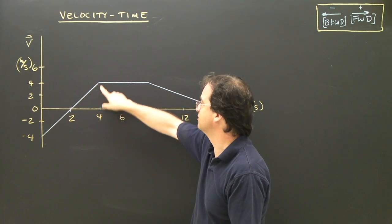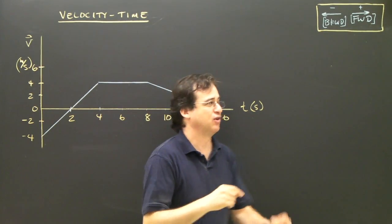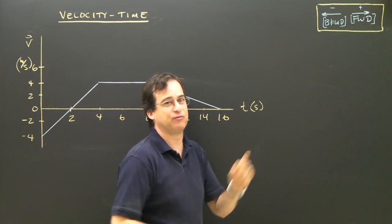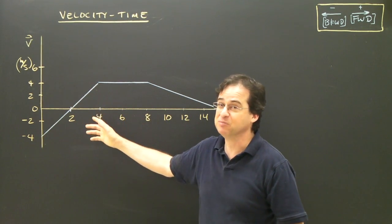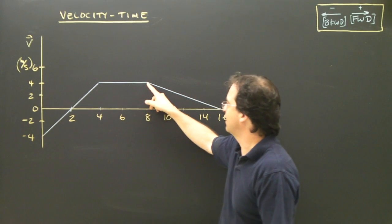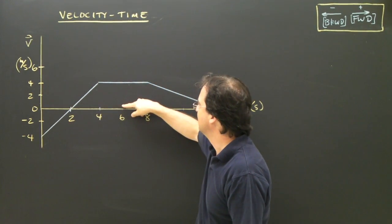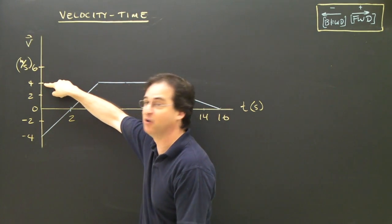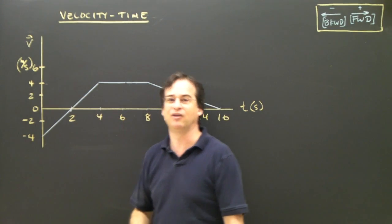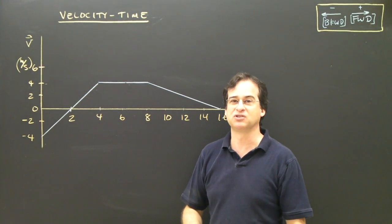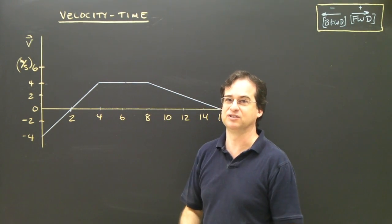At 4 seconds, I'm going at 4 meters per second — I'm running east, forward. So from 2 to 4 seconds, I sped up from zero. Then from 4 to 8 seconds: at 4 seconds I'm running forward at 4 m/s, at 6 seconds still 4 m/s forward, and at 8 seconds still 4 m/s forward. I must be running forward at a constant speed.